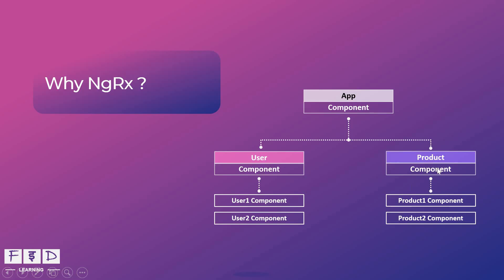Similarly, product1 and product2 components can share data with the product component using the @Input and @Output decorators. But in large applications with complex hierarchies, there are often multiple components, and data sharing between them can get complicated. For example, what if the user2 component needs to share data with the product2 component? Since these two components don't have a parent-child relationship, we can't use @Input or @Output decorators directly. And this is where NGRX comes into play.